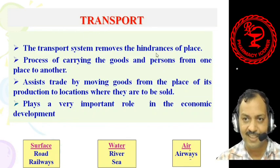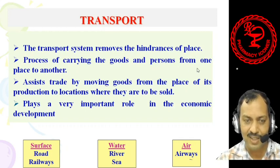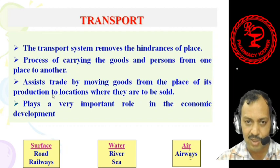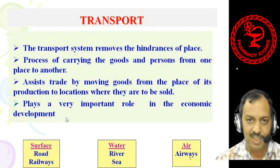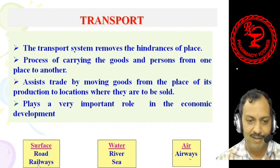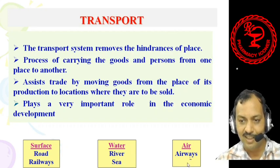Transport removes the hindrance of place. The process of carrying goods and persons from one place to another is called transport. Transport assists trade by moving goods from one place to the location where they are to be sold, and it plays an important role in economic development. Various types of transport include surface transport (road and railways), water transport (river and sea), and airways transportation.